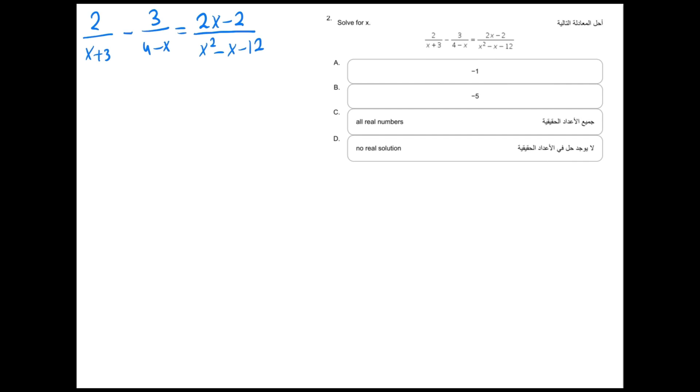The first thing that we need to realize, since we are dealing with fractions, we should make the denominator quite the same. In order to do so we should multiply this part by 4 minus x and this part by 4 minus x, and we're going to multiply this part by x plus 3 and this part by x plus 3, which is one of the techniques that you should know how to subtract or add fractions if they have different denominators.